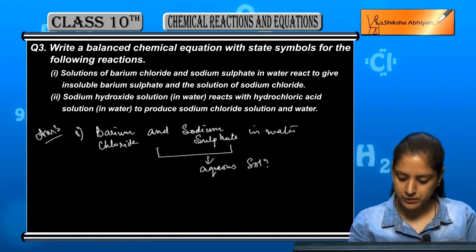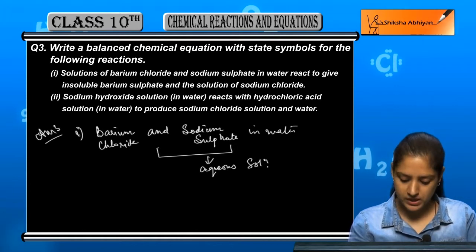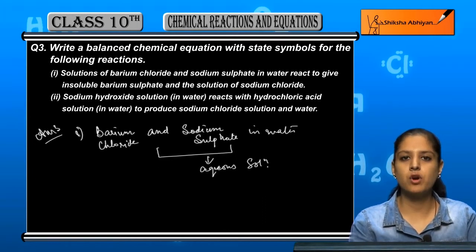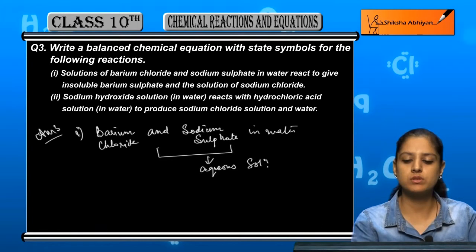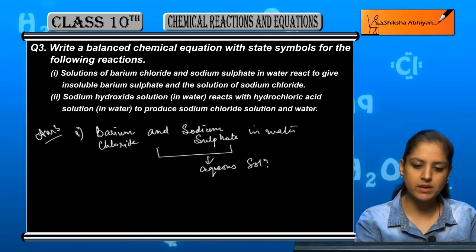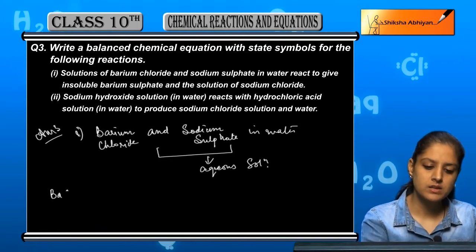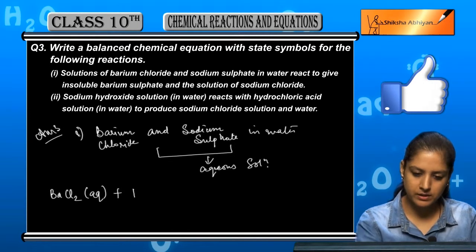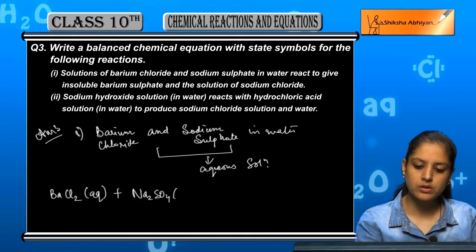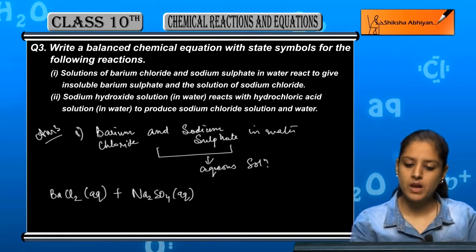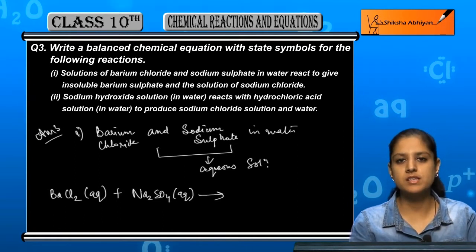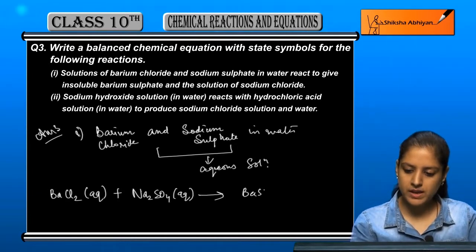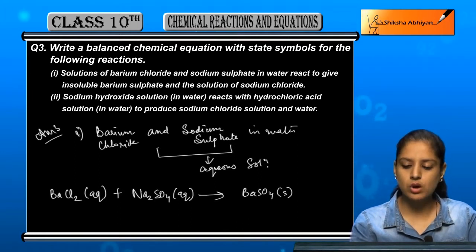Let us now write it in the form of a reaction. Barium chloride is BaCl₂, which is an aqueous solution, plus sodium sulfate Na₂SO₄, also aqueous. Now let us write the products: insoluble barium sulfate BaSO₄ — since it is insoluble it will be solid.